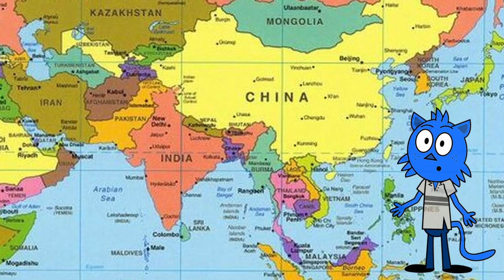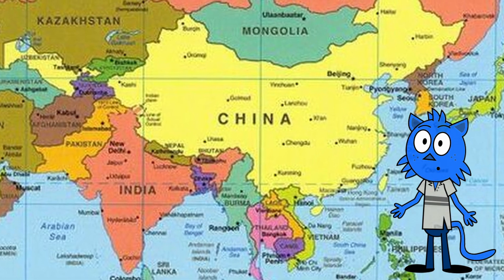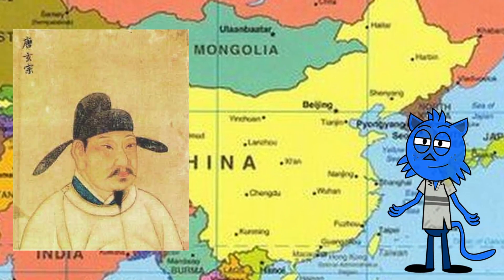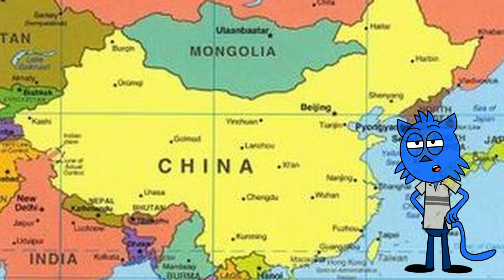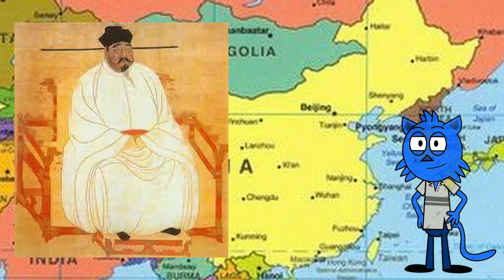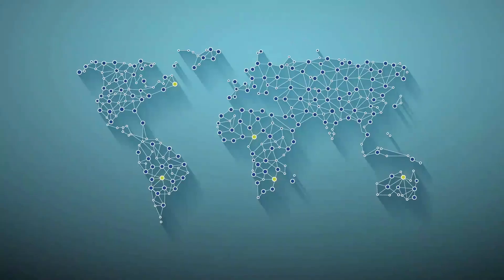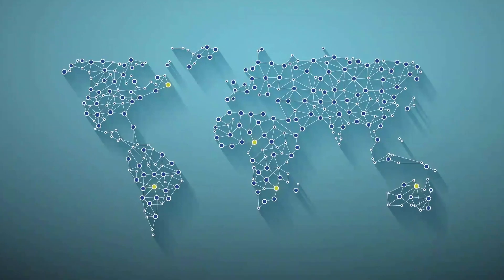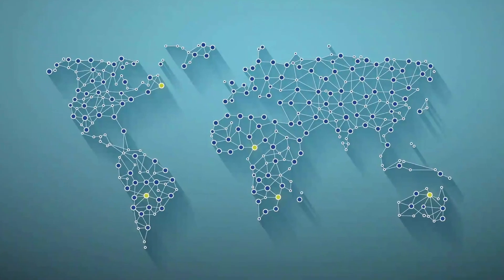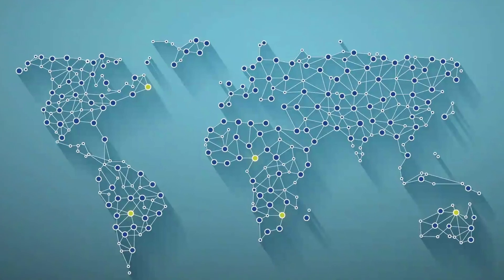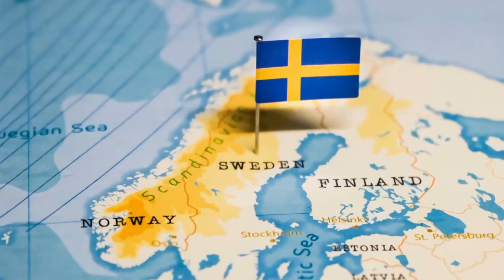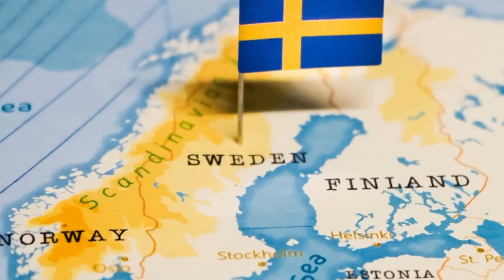Paper money appeared first in China during the Tang Dynasty, around the 7th century, and became more popular during the Song Dynasty. The idea spread slowly to other parts of the world, with the first European banknotes being issued in Sweden in the 1660s.